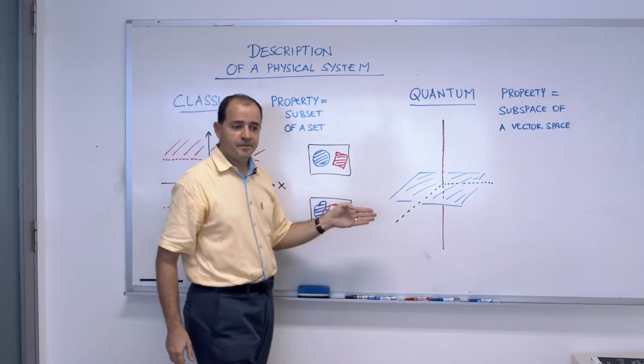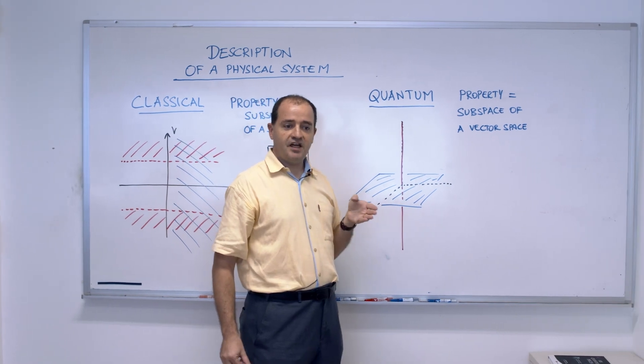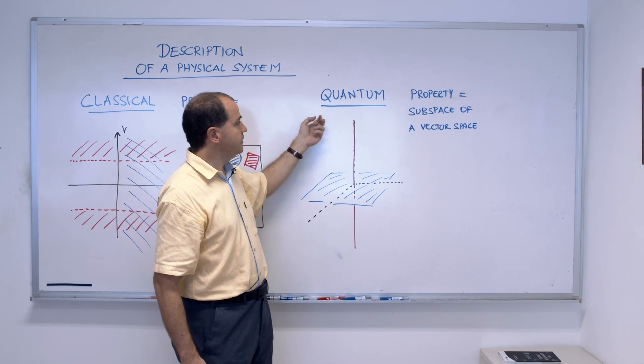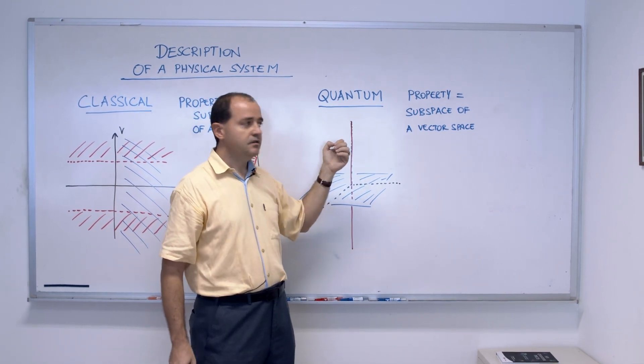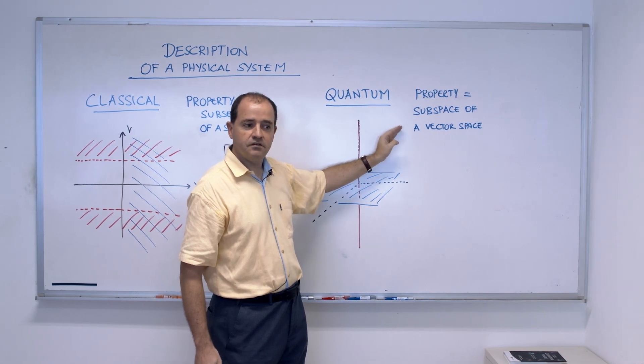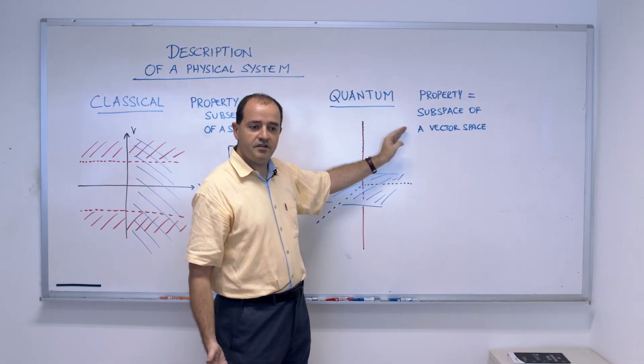Now, when we go to quantum theory, the recipe to describe states is different. The properties are no longer subsets of a set, but subspaces of a vector space.